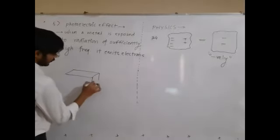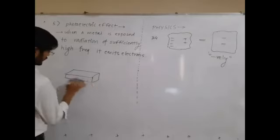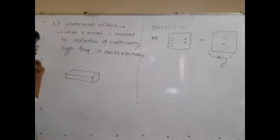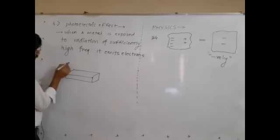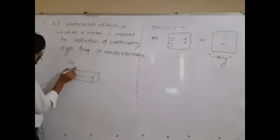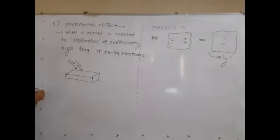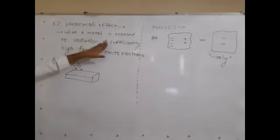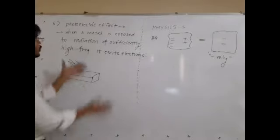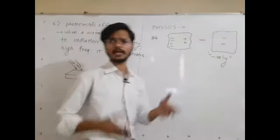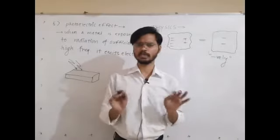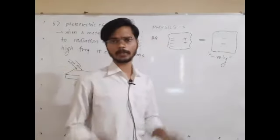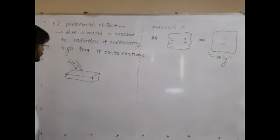Photo means light. Light is an electromagnetic wave. If you have sodium or potassium, you can observe that with visible light — when visible light falls on the sodium or potassium surface. In general, take any metal and make sure there is electromagnetic radiation of sufficiently high frequency.